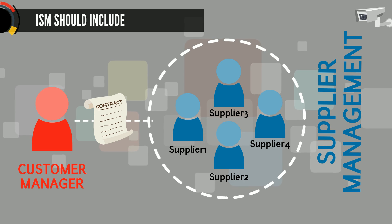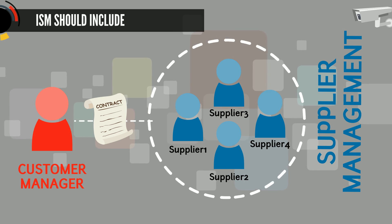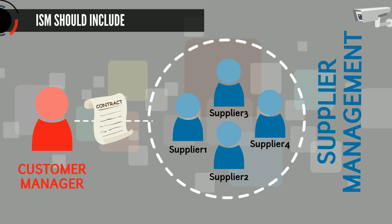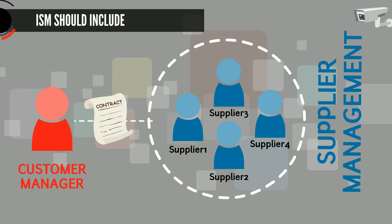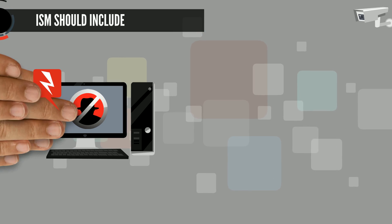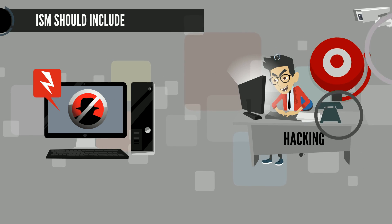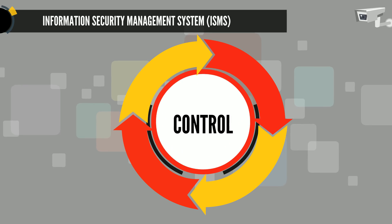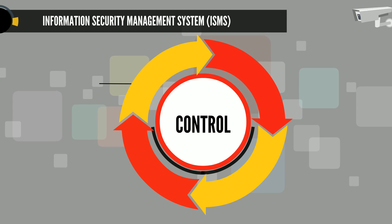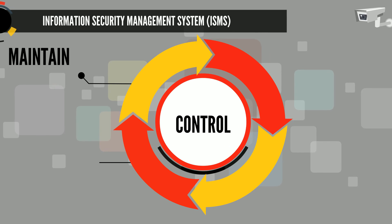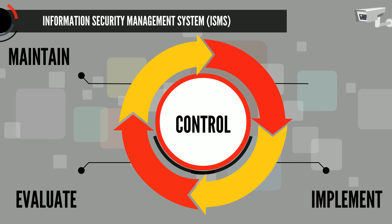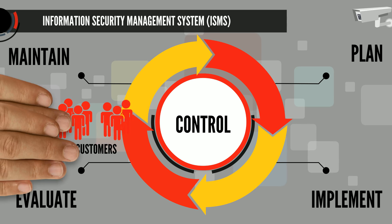ISM should also cover management of suppliers and contracts regarding access to systems and services in conjunction with supplier management, and management of all security breaches and incidents associated with all systems and services. The framework, or ISMS, in turn provides a basis for the development of a cost-effective information security program that supports the business objectives.